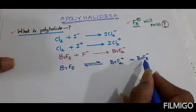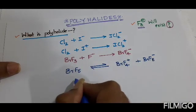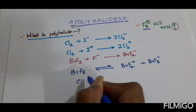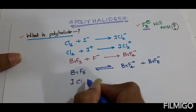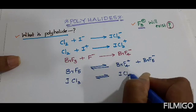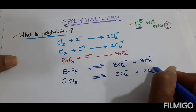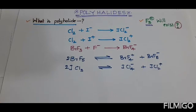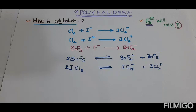Here, both BrF4⁺ and BrF6⁻ are polyhalides. Similarly, compounds like ClF3, BrCl5, ICl5, or ICl3 will ionize to give ICl4⁻ and ICl2⁺. So these are called polyhalides, formed by direct action of halogens with halide ions, direct action of interhalogen compounds with halide ions, or by ionization of interhalogen compounds.